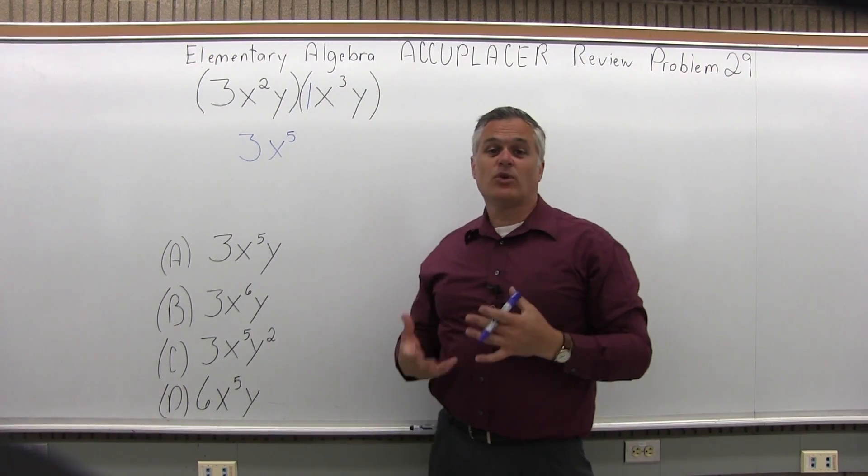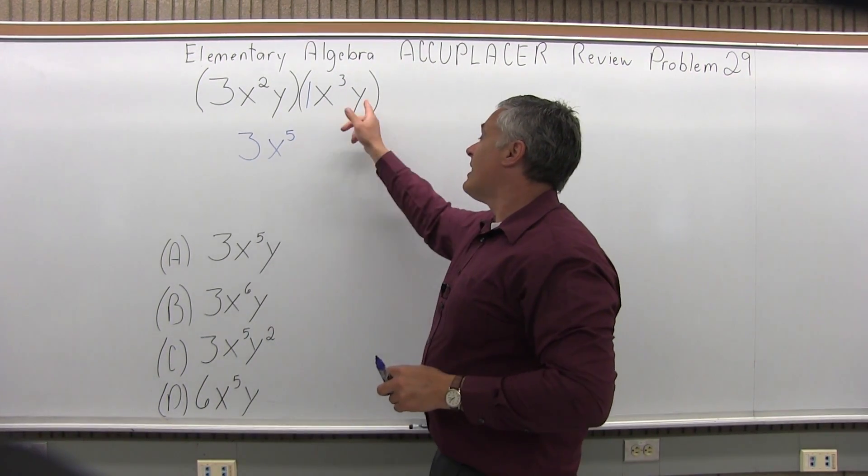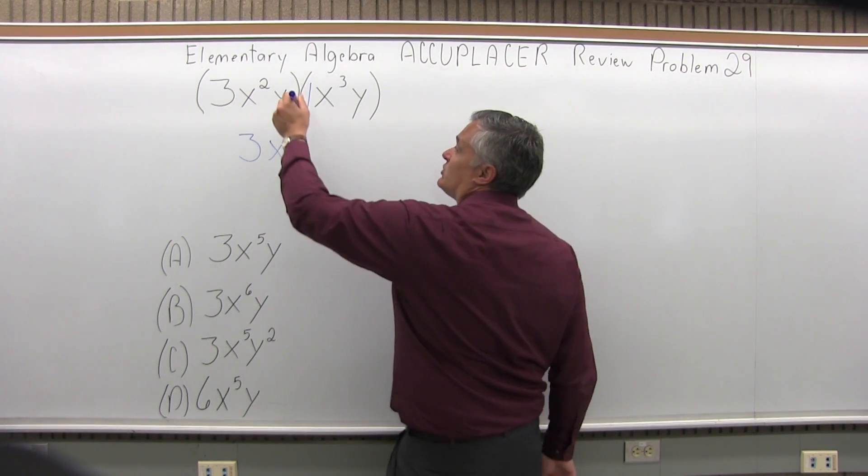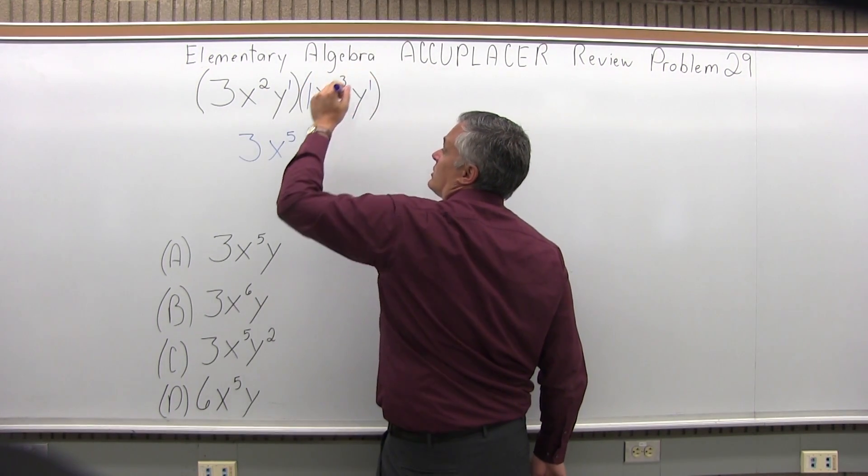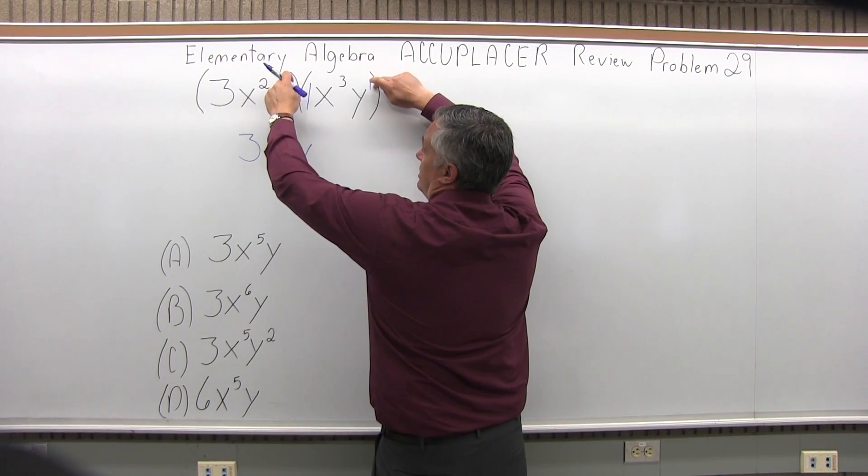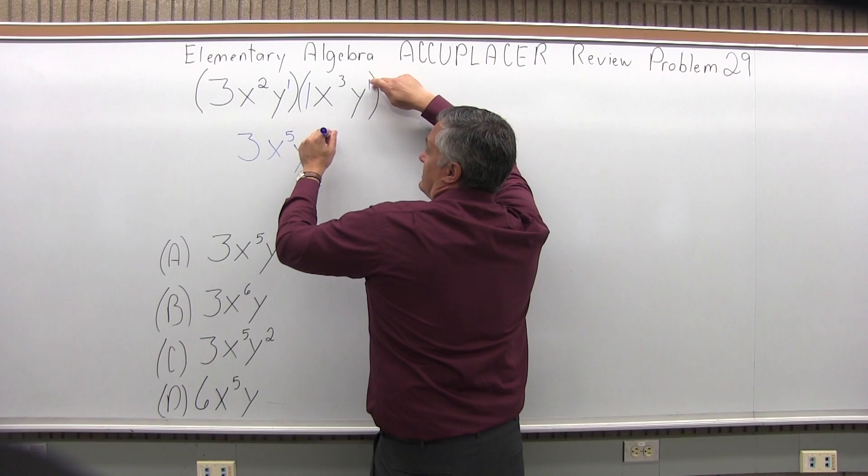Now to finish it off, look at the y's. You have y times y. There are no exponents written, so assume each one is a first power. When you add those exponents together, you'll have y to the 1 plus 1, so y to the second power.